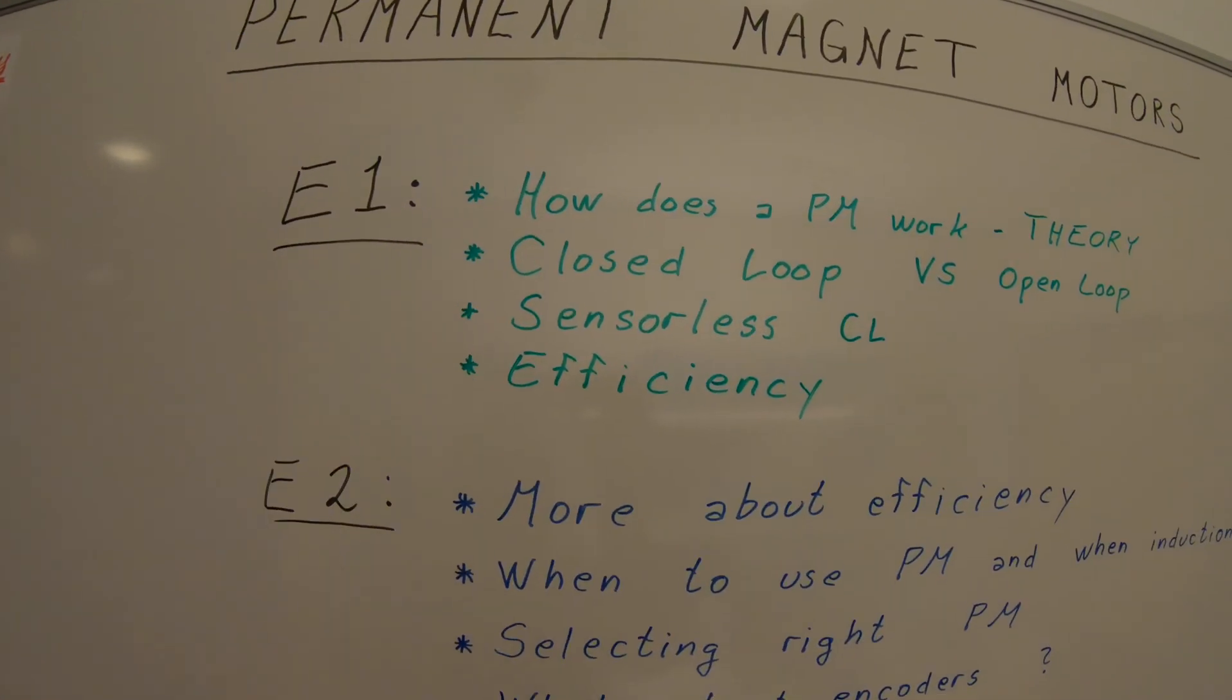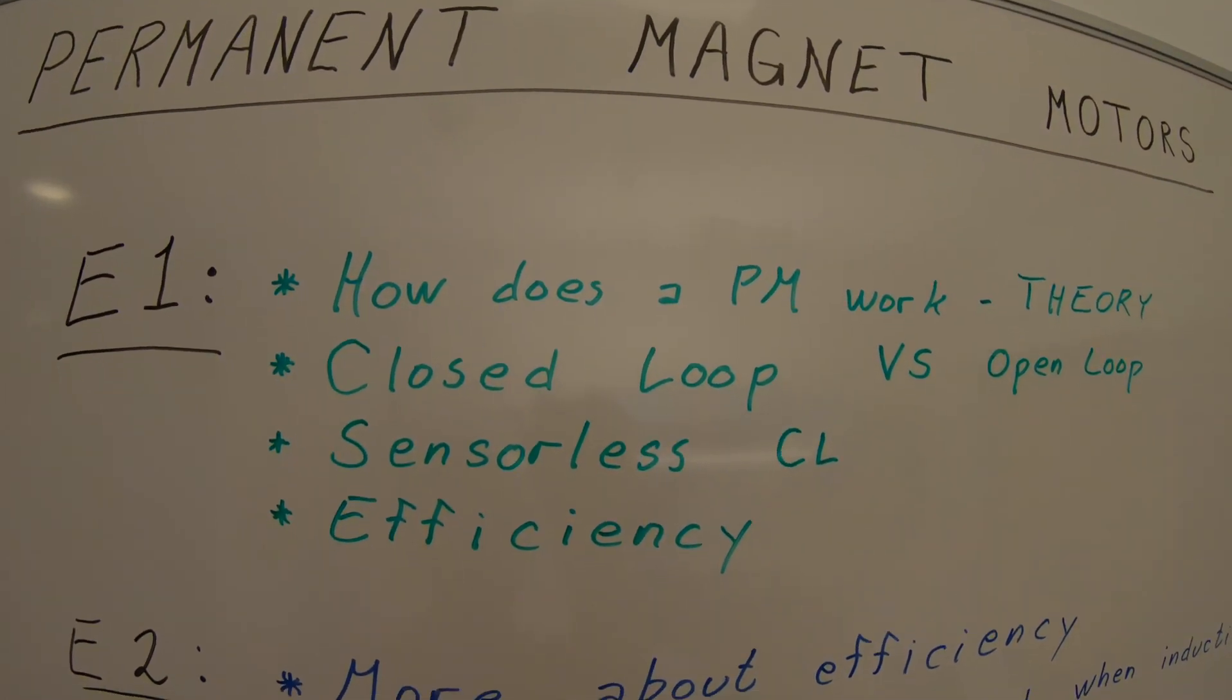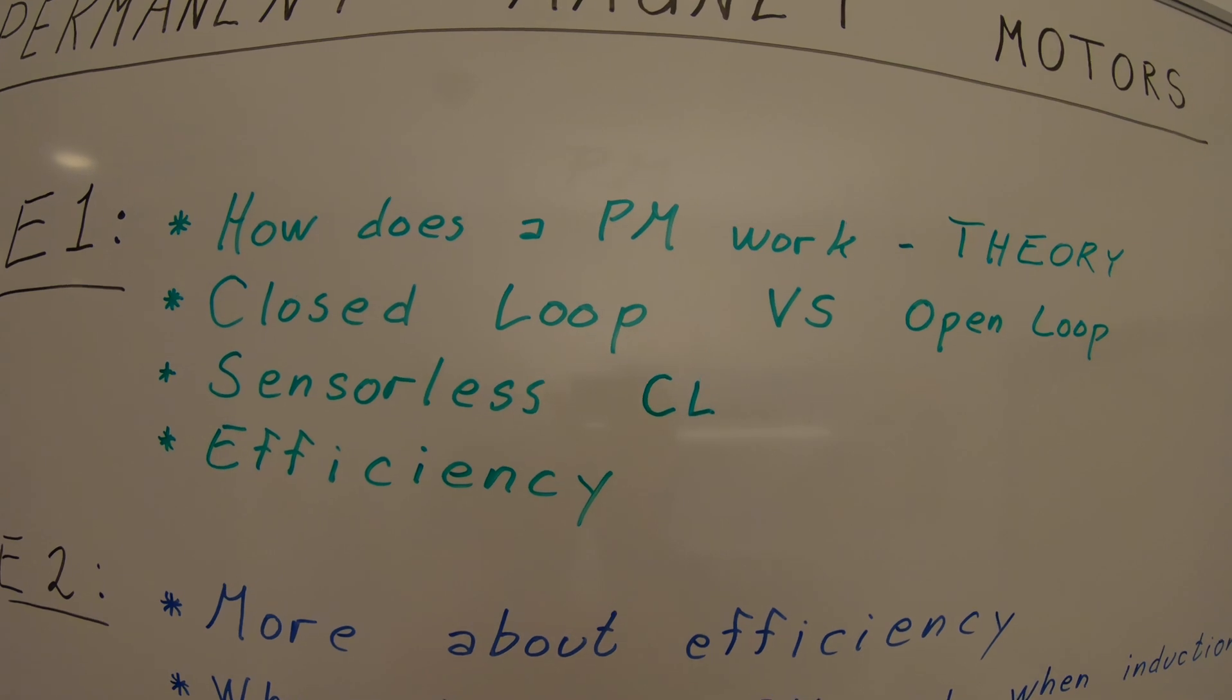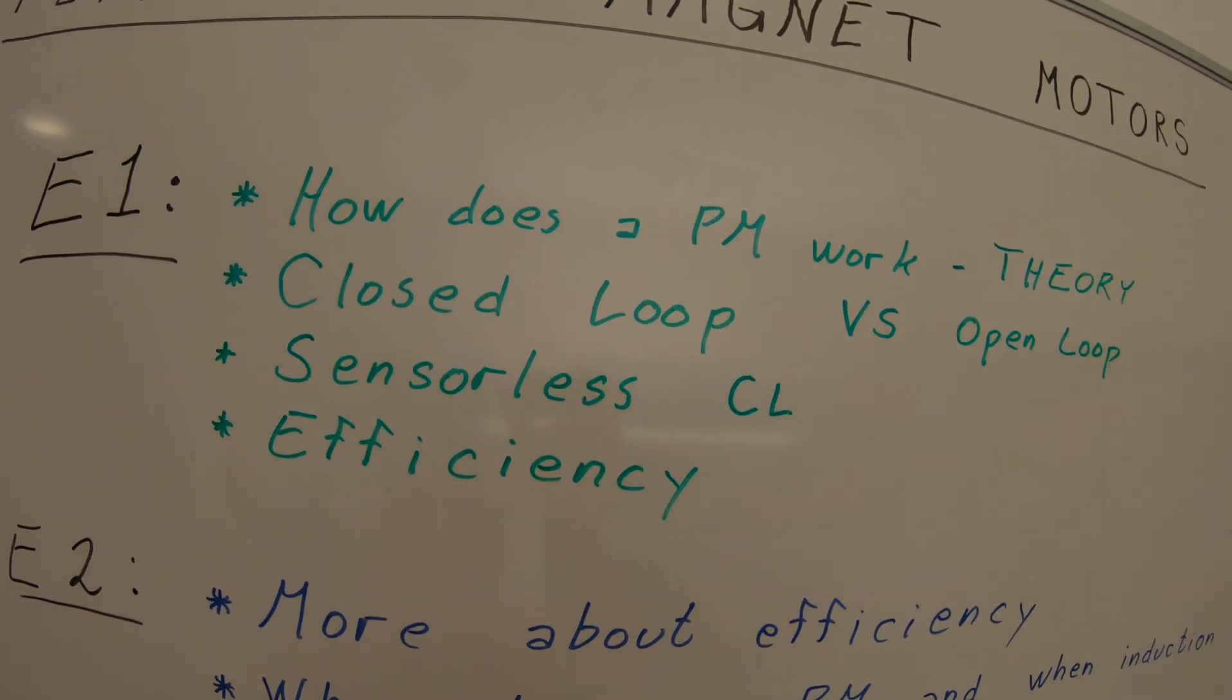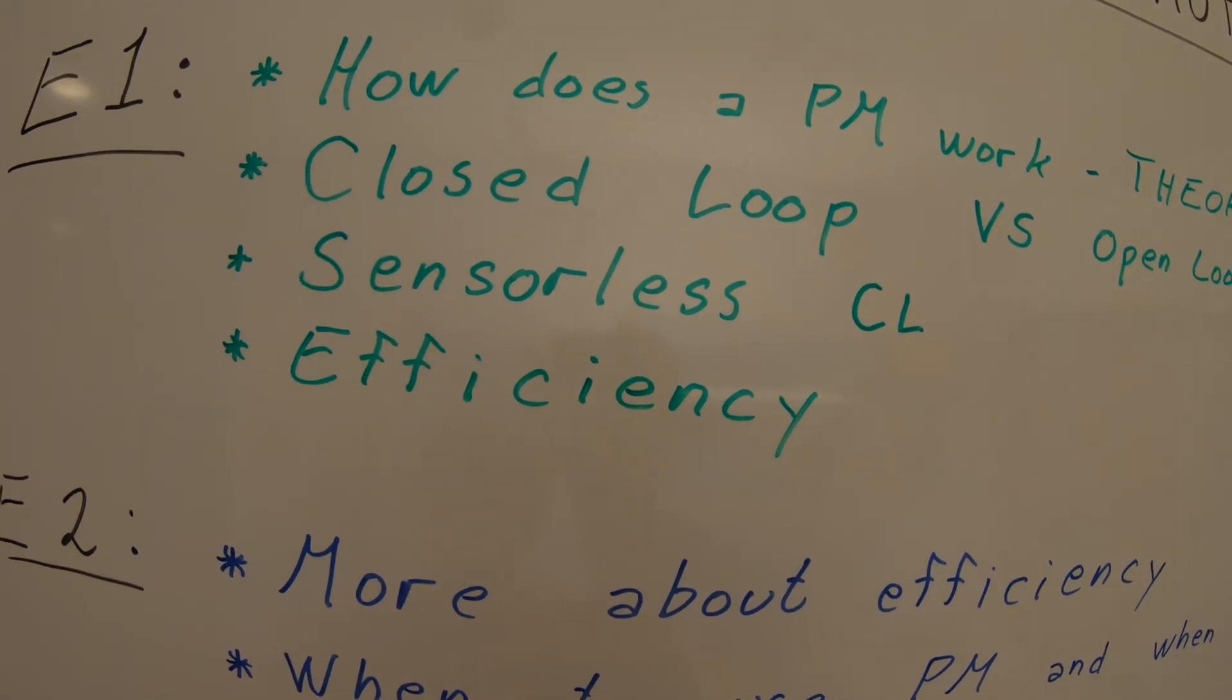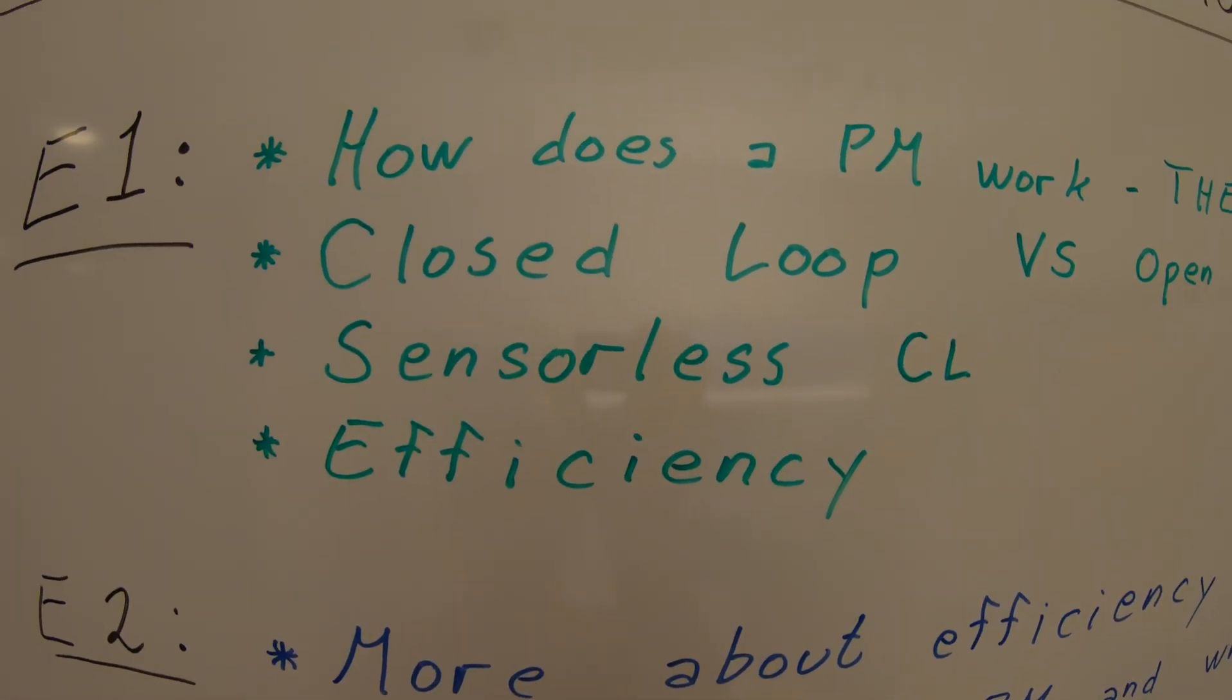The four episodes will have the following subjects. The first one will look into how actually a permanent magnet motor works, the theory behind it, how closed loop versus open loop work, sensorless closed loop, the principles behind it, and efficiency of these motors.